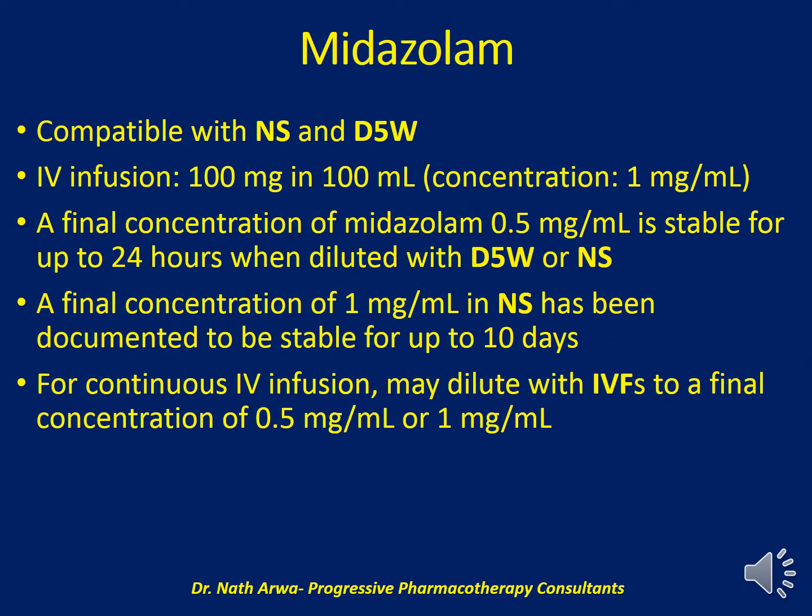Midazolam is compatible with both 5% dextrose in water and normal saline. We can administer it via IV infusion after diluting 100 mg in 100 ml to obtain a concentration of 1 mg per ml. A final concentration of 0.5 mg per ml is stable for up to 24 hours when diluted in 5% dextrose or normal saline, while the final concentration of 1 mg per ml in normal saline has been documented to be stable for up to 10 days. For continuous IV infusion of midazolam, we may dilute to a final concentration of 0.5 or 1 mg per ml and administer as directed by the critical care team.